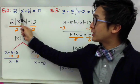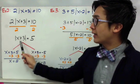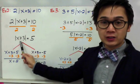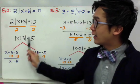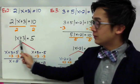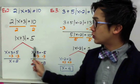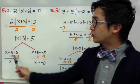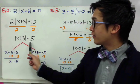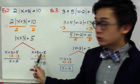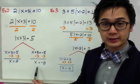So we cannot split into 2 yet — we need to get rid of the 2 by dividing both sides by 2. We'll end up with the absolute value of x plus 3 equal to 5. Now that we only have the absolute value expression on one side, we can split into 2: one for positive 5 and one for negative 5, giving us x equals 2 and x equals negative 8.